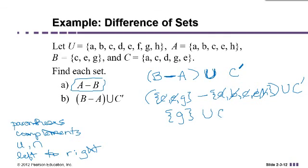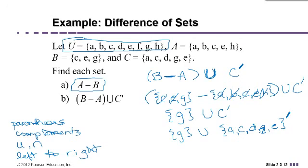And then now we need to union that with C complement. Now remember you do the complement first. So let's write down what C is. C is the set containing A, C, D, G, and E. Well, we want the complement of that. And complement means everything that's in the universal set, but not in that set. So basically all you have to do is look back at your set U, which represents everything under discussion, and remove from it the A, C, D, G, and E. So I'm going to cross off A, C, D, G, and E.